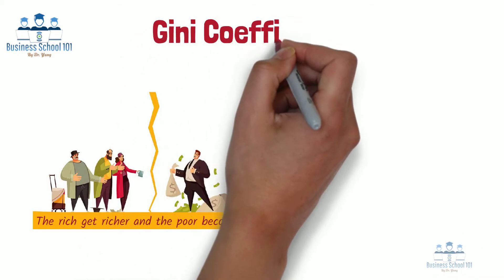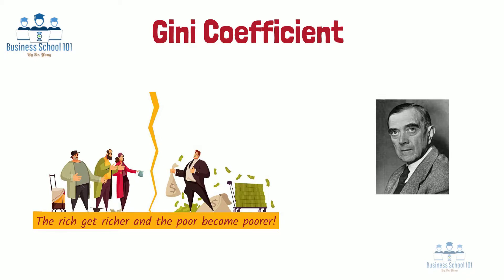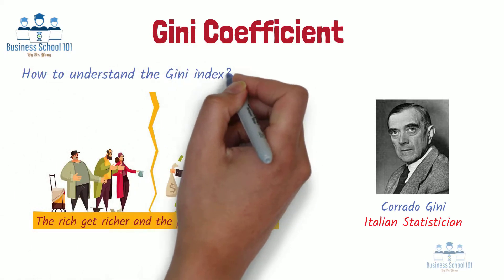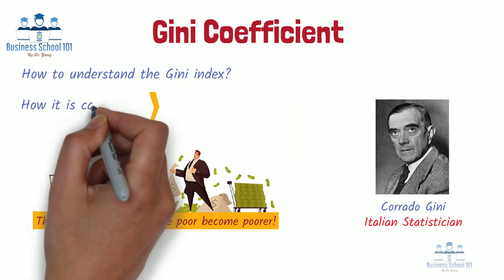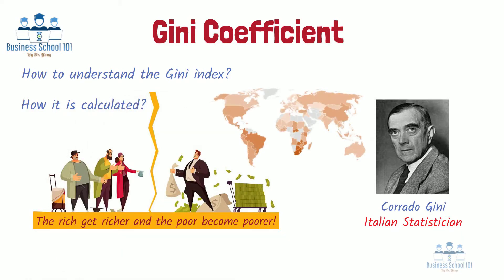The Gini coefficient, or Gini index, developed by the Italian statistician Corrado Gini in 1912, is one of the most popular metrics to measure income distribution across a population. In this video, I will discuss how to understand the Gini index, how it is calculated, what is the Gini index of the world, and what are its advantages and limitations.